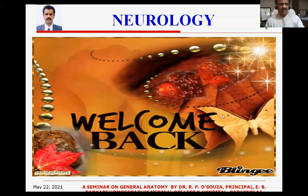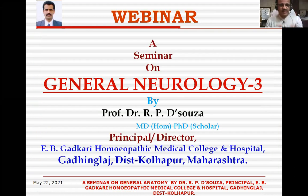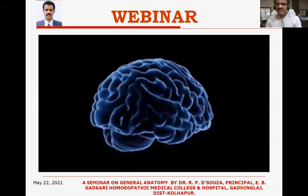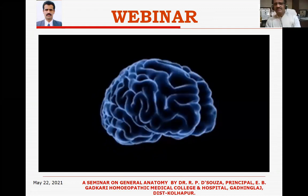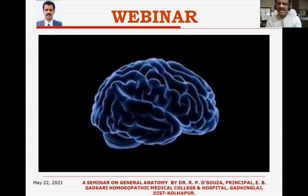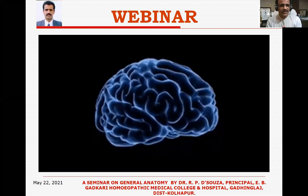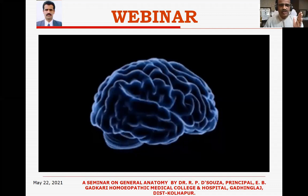Hello and welcome back for a webinar on general neurology. My dear students, we have completed two episodes on general neurology so far and today we are going to deal with the last episode of general neurology. In this part we will try to complete the remaining part related to the nervous system — mostly anatomy but even physiology because they go hand in hand. Today I have chosen for you: the Autonomic Nervous System.